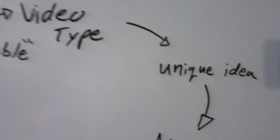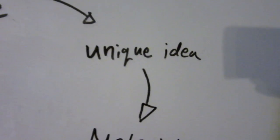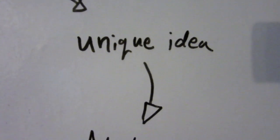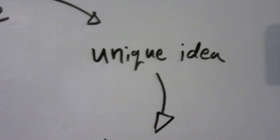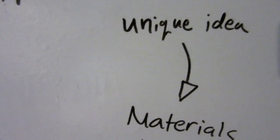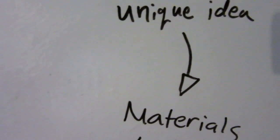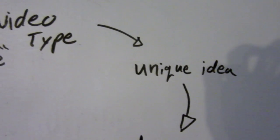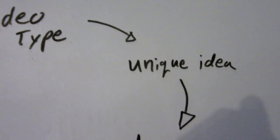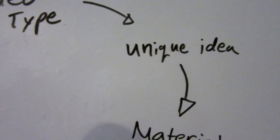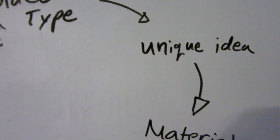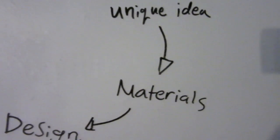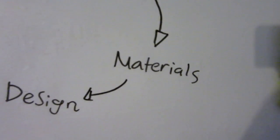Then from there I move into unique idea. This means that when making a YouTube video, I always want to choose an idea that is unique or has something unique about it, so I'm not just copying someone else.